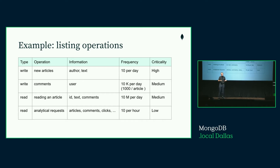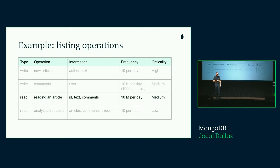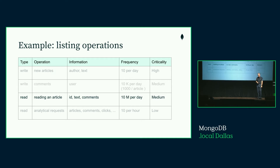We may also have analytics queries. Those won't run as often, but knowing we'll have them makes us think about having an analytical node that won't disturb the main workload. In summary, we want to list all the important operations on our system. Usually one or two of these queries will emerge as the ones driving your design — the high-velocity queries. For example, reading an article at 10 million a day is probably what we want to optimize our model around.